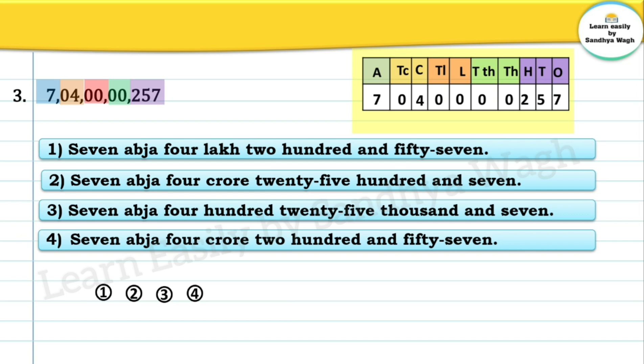In this number the ten crores place, ten lakhs place, lakhs place, ten thousands place, and thousands place all have zeros, so we do not read those places. The answer remains option number four: seven abja four crore 257.